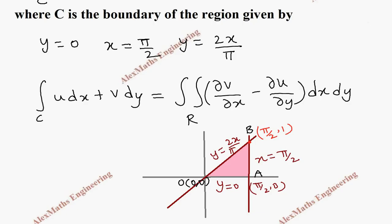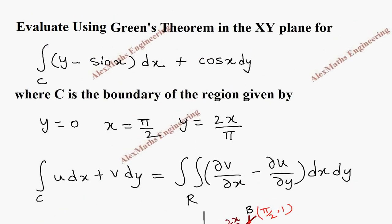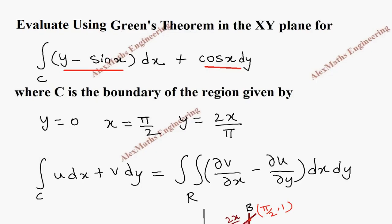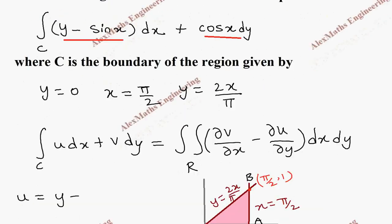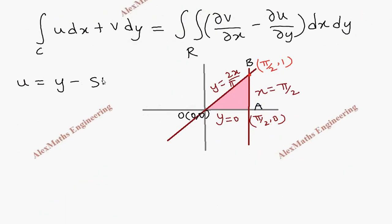Now from the question we have u as y minus sin x and v as cos x. Let's write it separately. So u equal to y minus sin x. And from this we can find what is dou u by dou y which is 1. And dou v by dou x we can find from the v. v is cos x and its differentiation is minus sin x.